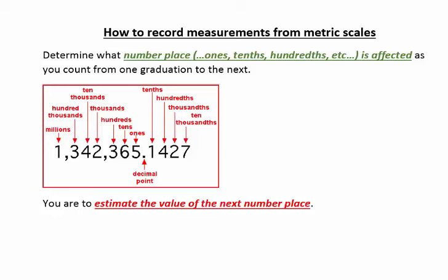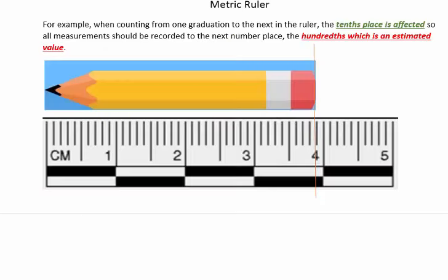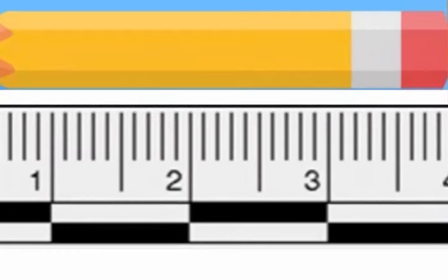So now we'll look at some examples. We'll begin with a metric ruler. When counting from one graduation to the next on this ruler, we see that the tenths place is affected.